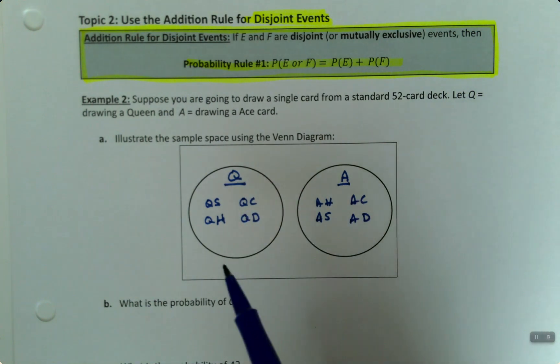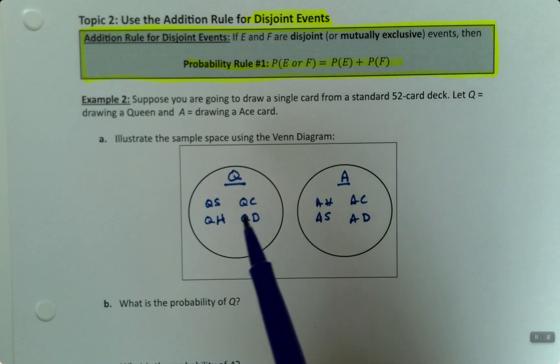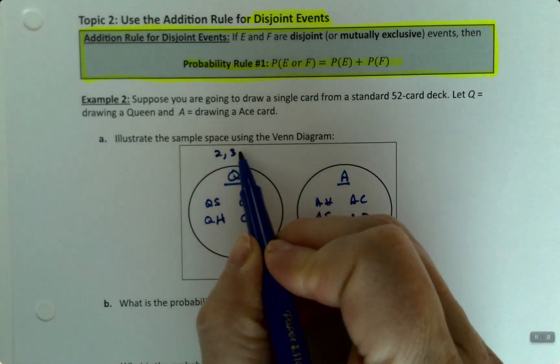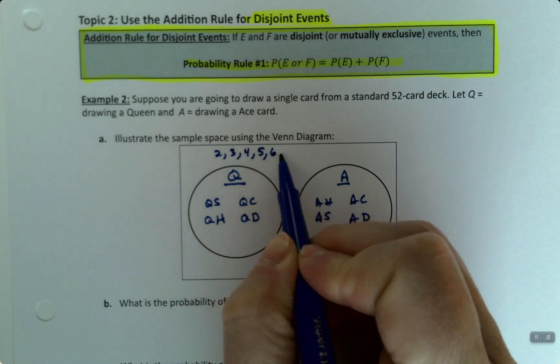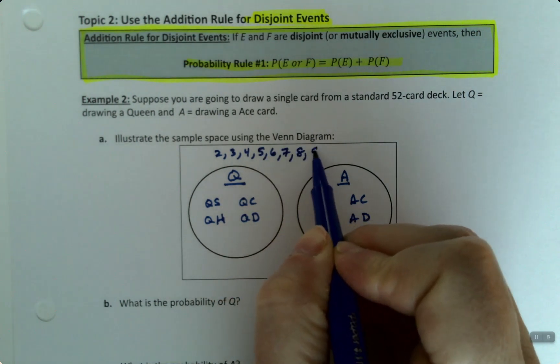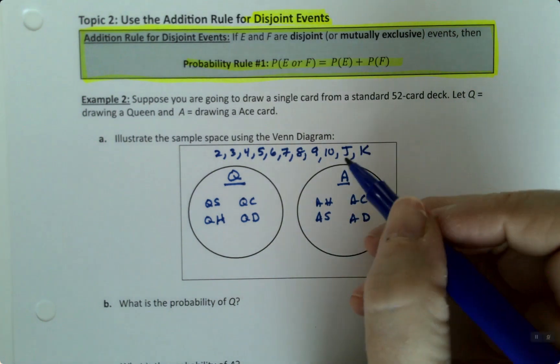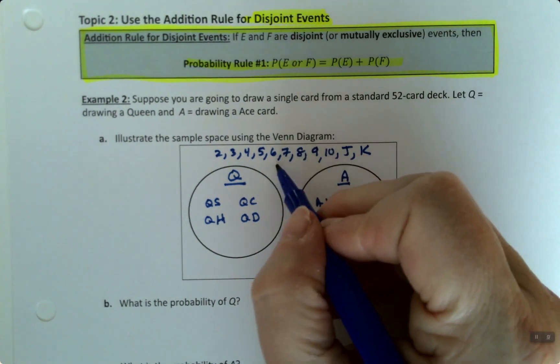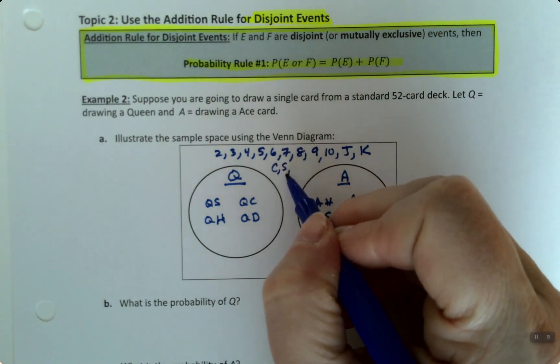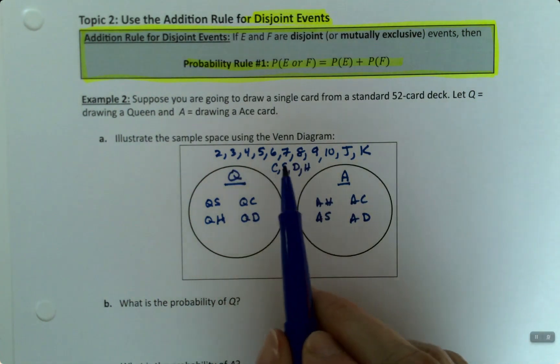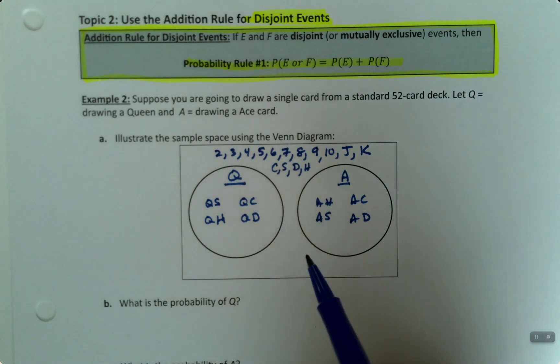So now what's roaming around out here? In the box is everything else in the sample space that is neither one of those two things. So that's the two, the three, the four, the five, six, seven, eight, nine, ten, jack, and king for all the suits for clubs, spades, diamonds, and hearts. So we have a lot of cards out here for the standard 52 card deck.